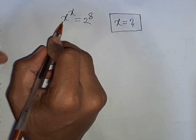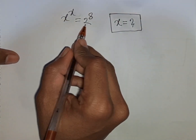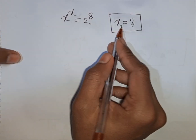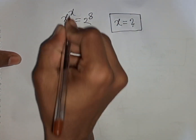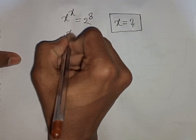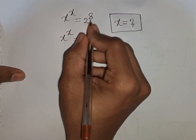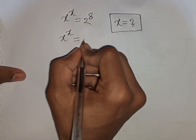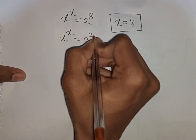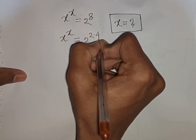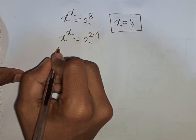How to solve x power x is equal to 2 power 8 — find the value of x. So we have x power x is equal to 2 power 8, which can be written as 2 power of 2 times 4.